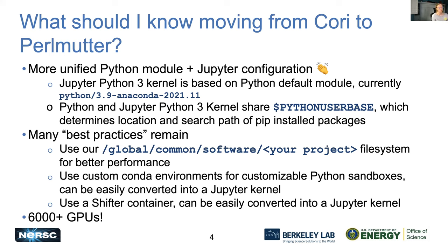We are still encouraging Shifter, especially at large scale, and this is also easily used in Jupyter as a kernel. If you need help with this, please let us know. And finally, Perlmutter has 6,000 GPUs, so of course taking advantage of those will be a little different.